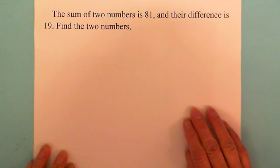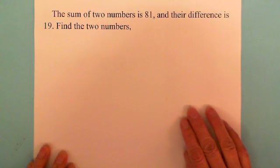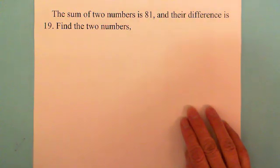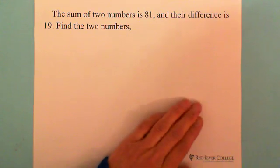The question is: the sum of two numbers is 81, and their difference is 19. Find the two numbers.